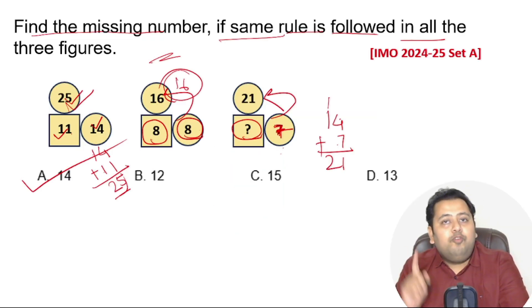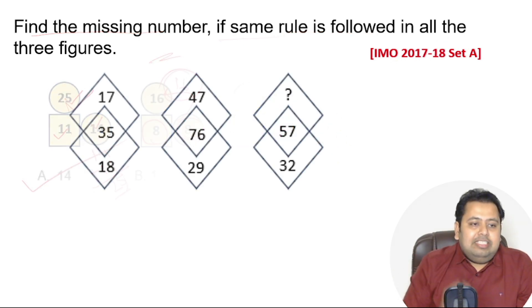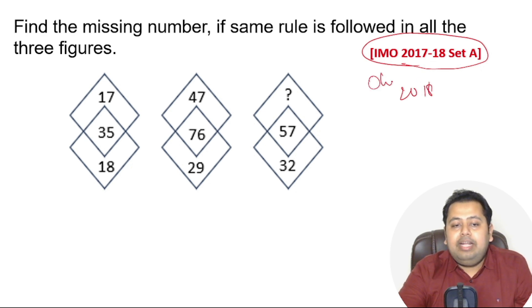Now let's go to a little advanced question. I would want you to solve it and then share it in the comment section. I will reply to each and every one of you. The question says find the missing number if same rule is followed in all the three figures. This was a question that was asked in 2018, so this was Olympiad exam 2017-2018 and this was asked in Set A.